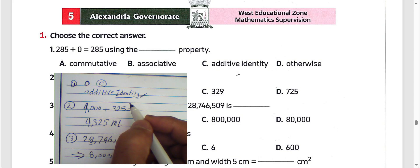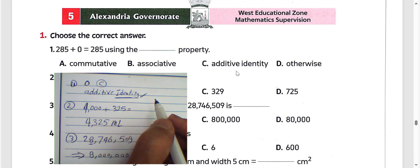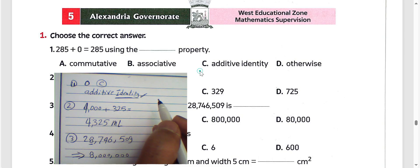We used the additive identity property here because 0 plus any number gives the same number.